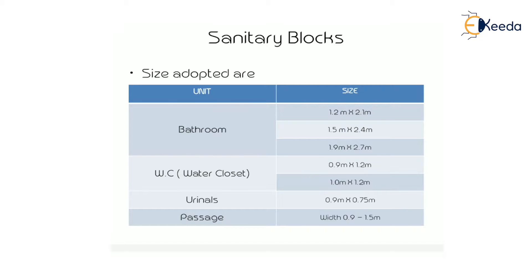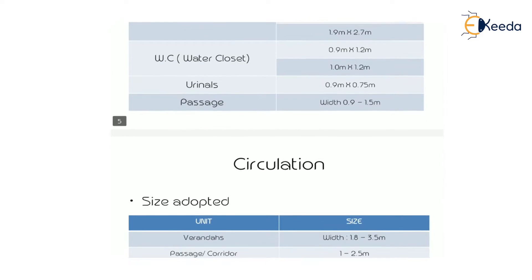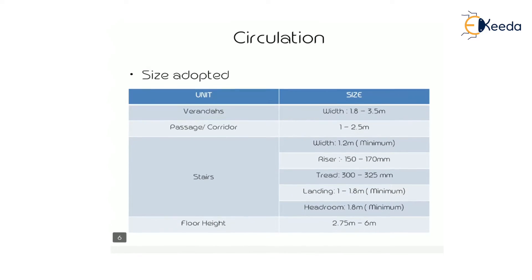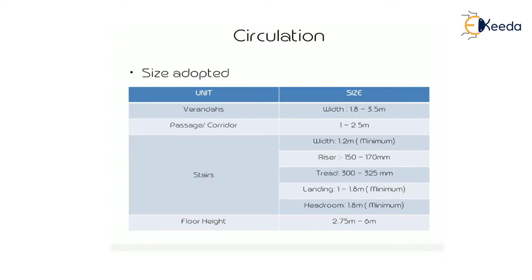The passage width is 0.9m to 1.5m. The next common arrangement is circulation. The unit of circulation is veranda. For horizontal circulation, we use the veranda, passage, or corridor. The width for a veranda is 1.8m to 3.5m — those are the minimum sizes.